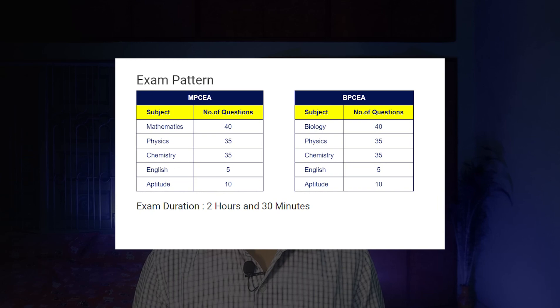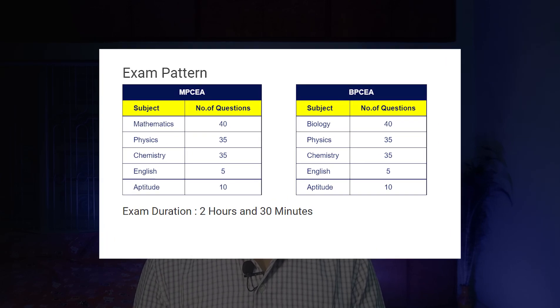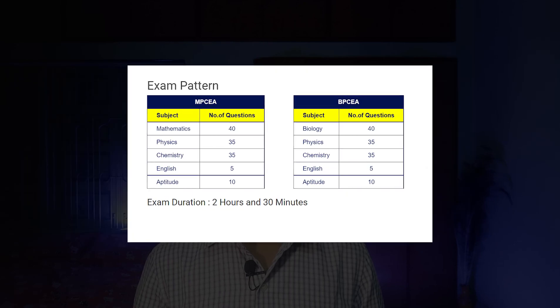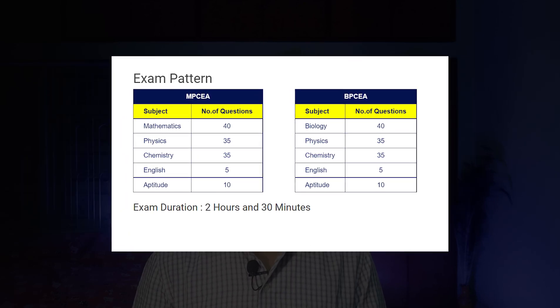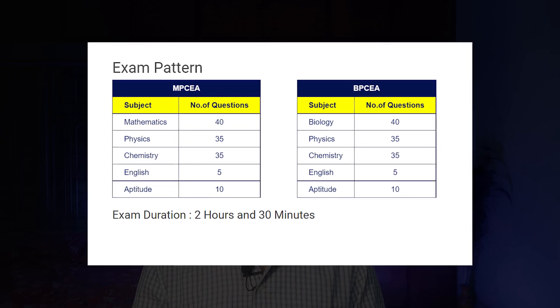Hey everyone, in this video we are going to look at how you need to prepare for VITEEE. You must be completely aware of your VITEEE examination pattern. Maths has 40 questions, Physics 35 questions, Chemistry 35 questions, English 5 questions, and Aptitude 10 questions. For the PB-CEA group, which includes Biology, there would be 40 questions instead of Maths.